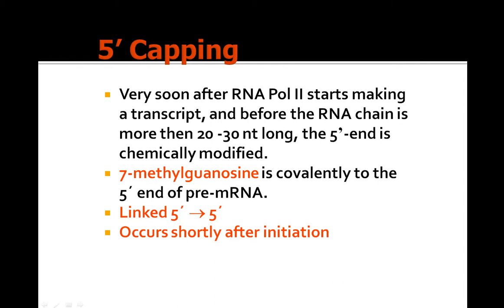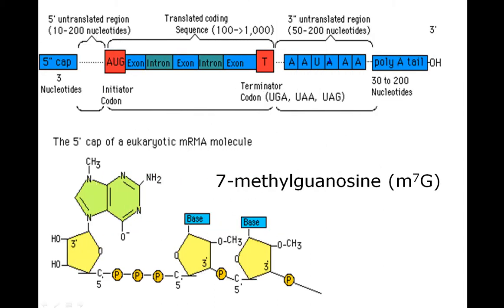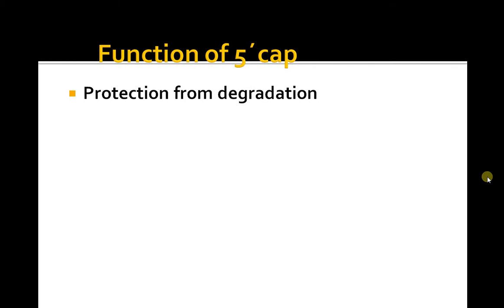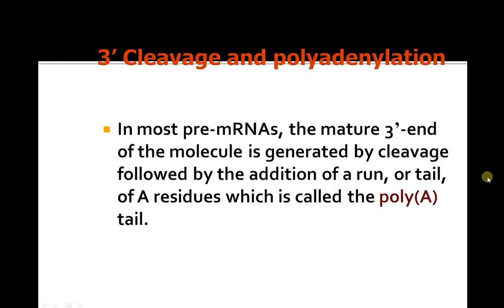The 5' methylguanosine cap is linked with a 5' to 5' bond and it occurs shortly after initiation. The functions of the 5' cap include protection from degradation, increasing translation efficiency, transport to the cytoplasm, and splicing of the first exon.